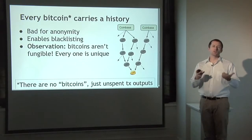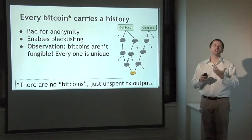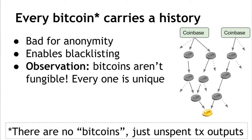As we spent a whole lecture discussing, this is bad for anonymity because you can track ownership of coins. It also potentially enables blacklisting — if you want to blacklist coins owned by a specific person, you can do so using the fact that history is maintained as coins move around. There's an interesting observation here: Bitcoins aren't fungible. Fungible is an economic term meaning every Bitcoin has the same value as any other and they can be exchanged with no loss or change in value. With Bitcoins, that's not exactly true — every Bitcoin is unique and has a different history. If the history is meaningful to people, my one Bitcoin may not be the same as your one Bitcoin.